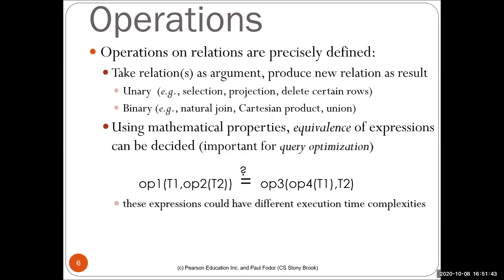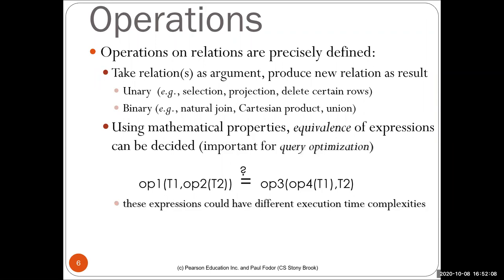One of the advantages and reasons why relational databases became popular is that you can automatically prove equivalencies of expressions using these operations. This is very important for query optimization because you get different expressions with the same meaning but with different time complexities. In most cases, the average time complexity is different.